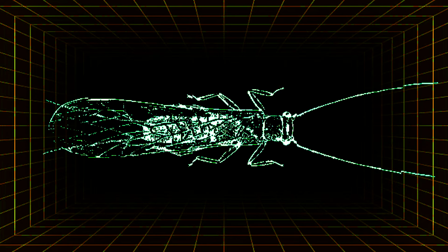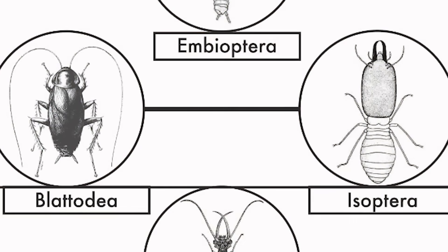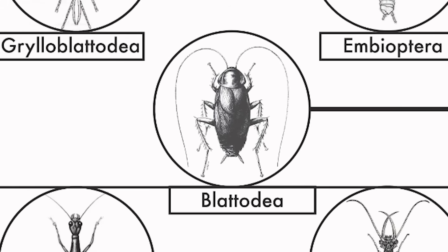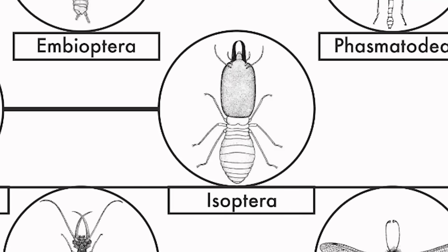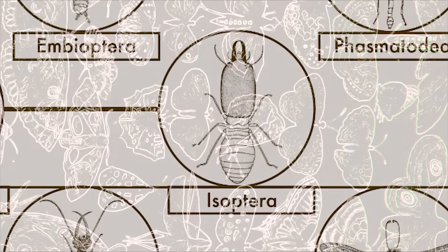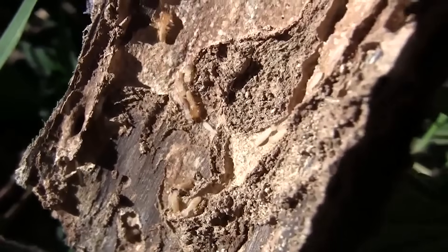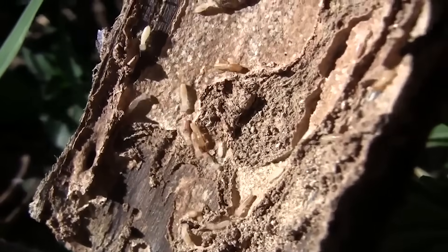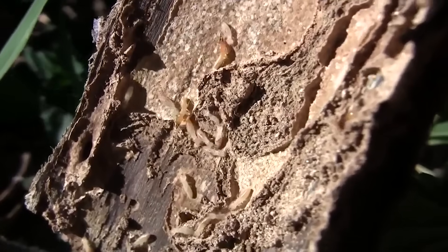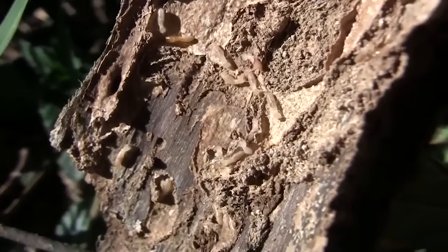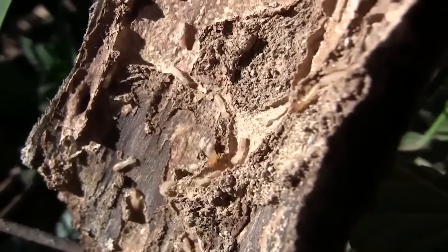These insects are genetically similar to cockroaches, so much so that they are considered a suborder, meaning they actually belong within the order Blatodea, which contains cockroaches and subsequently termites. However, these insects are so behaviorally and morphologically distinct, I decided to make them into their own video. But understand, this could also be considered a part two to the Blatodea episode.